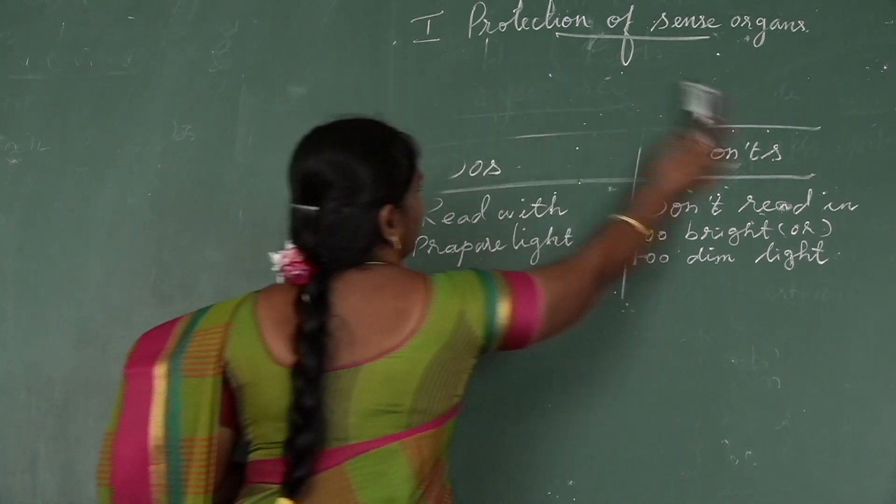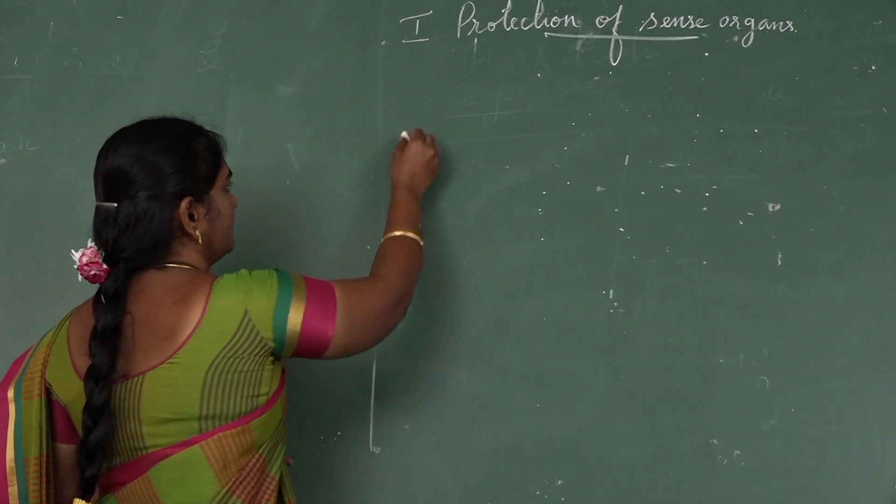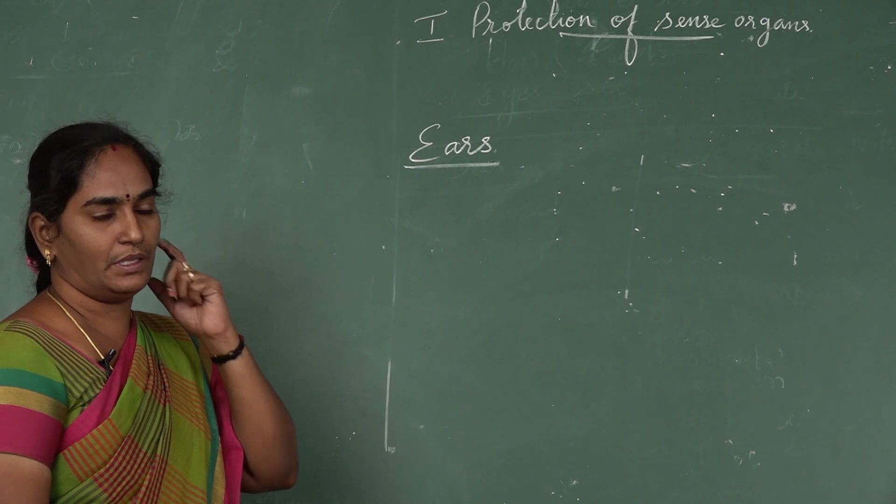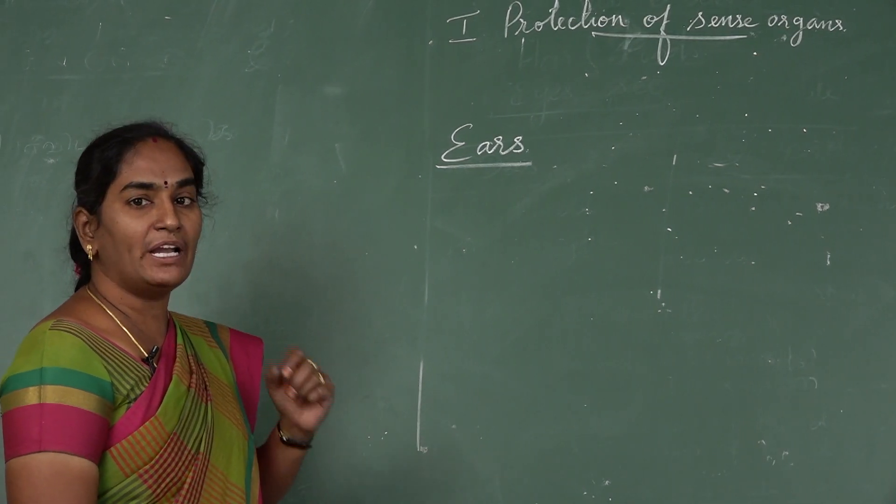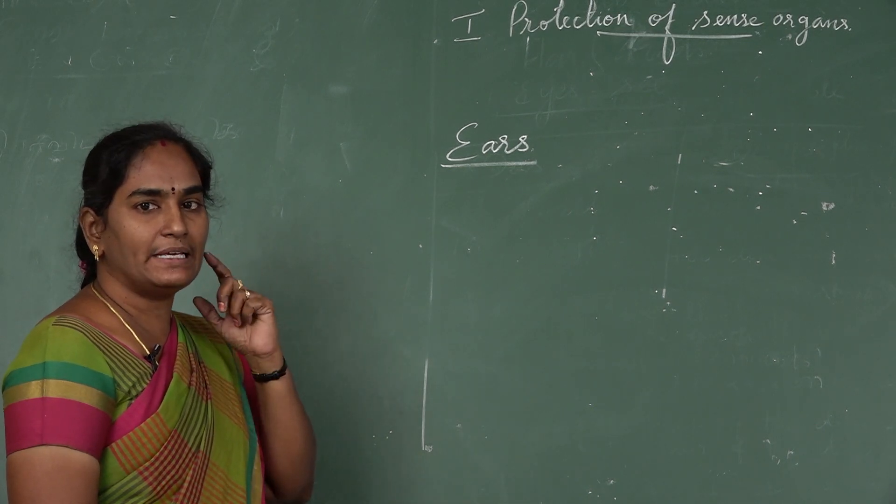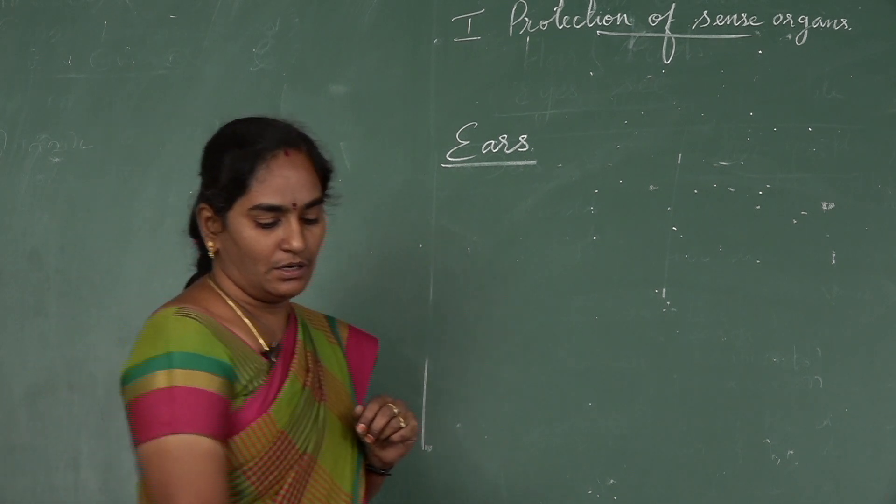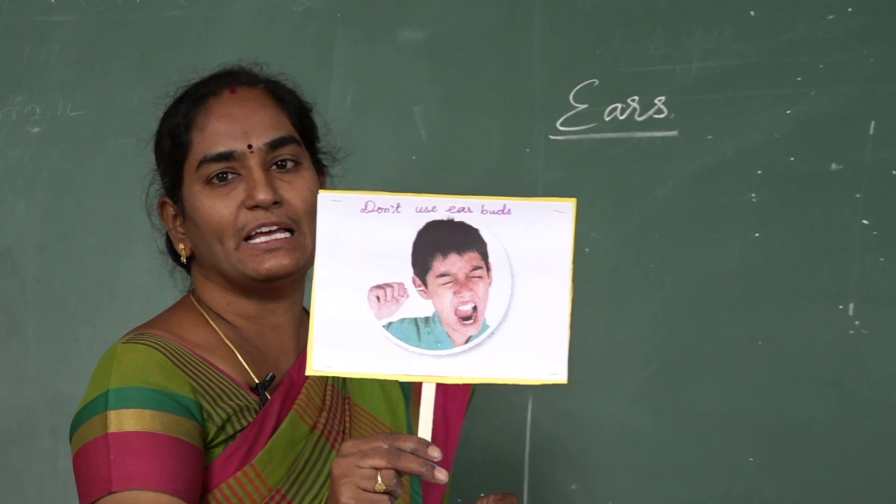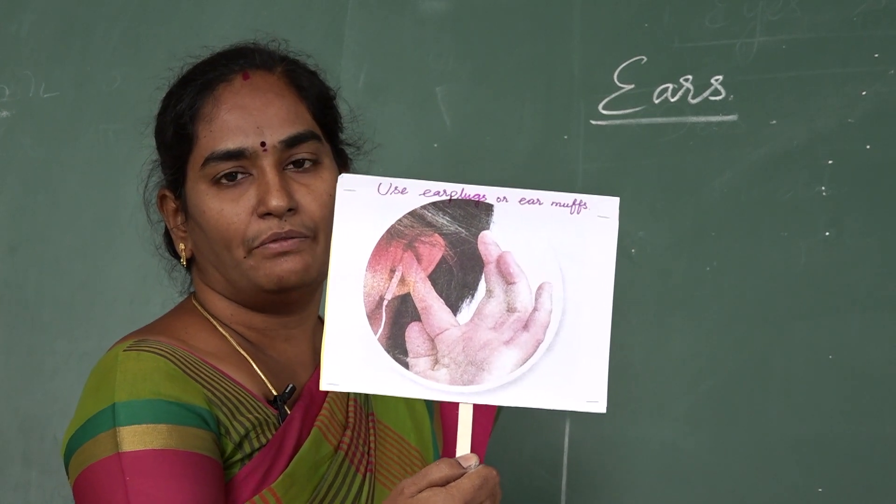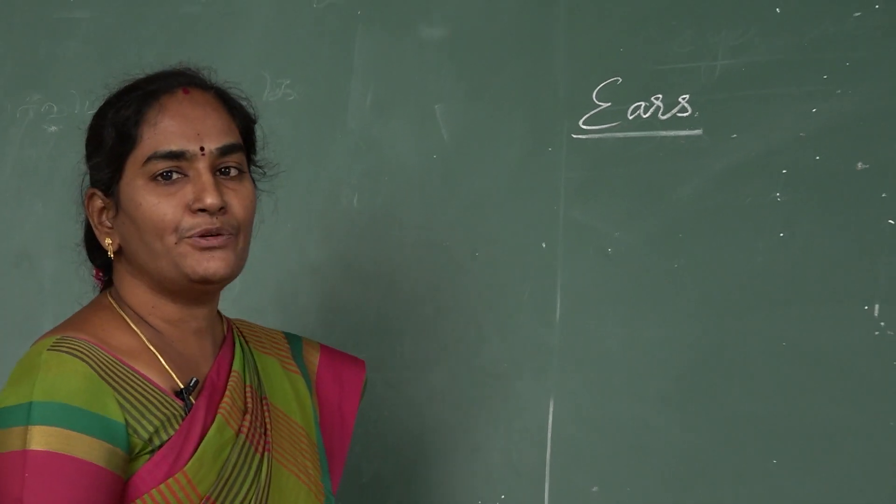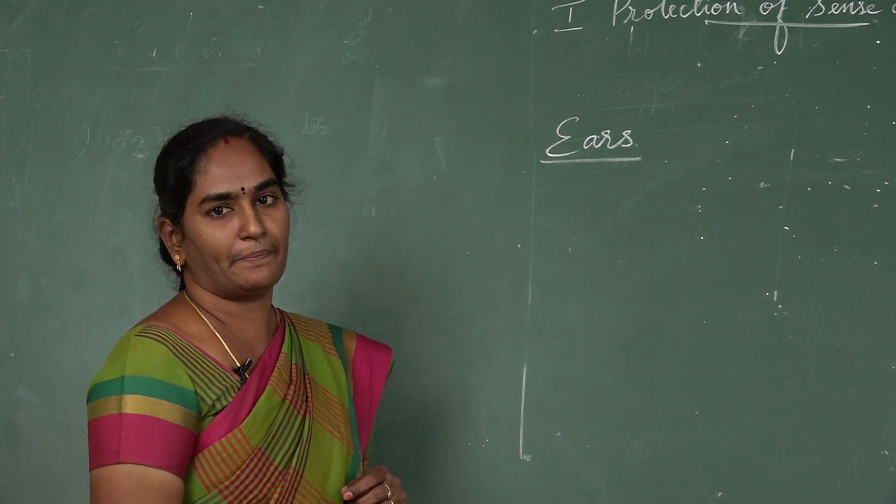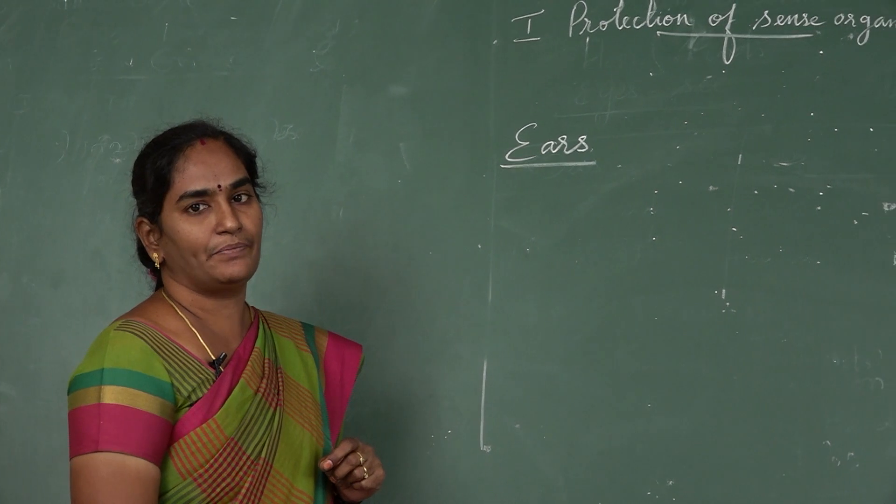When you go outside you must wear sunglasses because sunglasses protect our eyes from the sunrays. Next is ears. Ears help us to hear the sound. If you want to protect the ears, avoid loud noise. Don't listen to music at higher volume while using earphones or headphones. Don't clean your ears with earbuds. Use ear plugs when you are exposed to loud noise. Dry your ears after taking bath. Cover your ears while swimming. If you have any pain in your ears, consult a doctor.